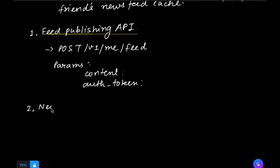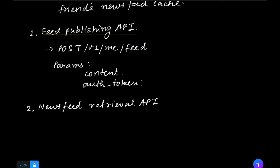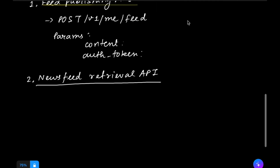The second API is the newsfeed retrieval API. To read or get contents from the newsfeed, we use a GET request — GET v1/me/feed — and we pass the authorization token to authenticate the API request.